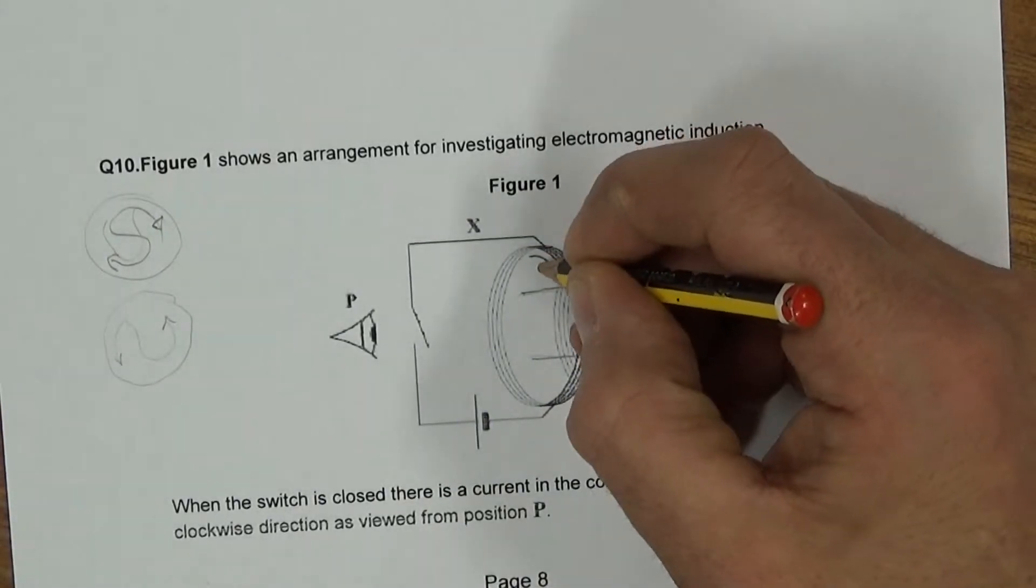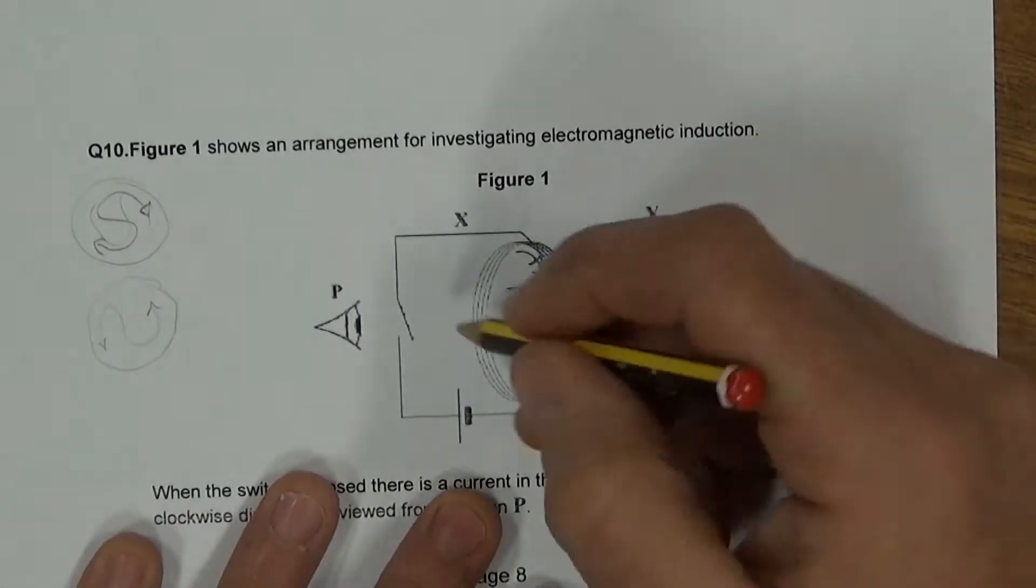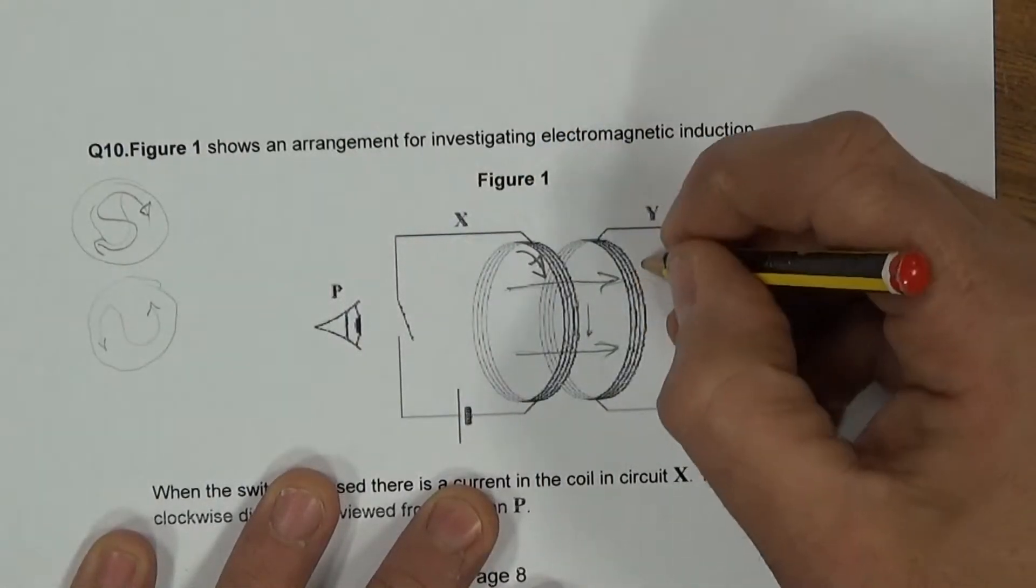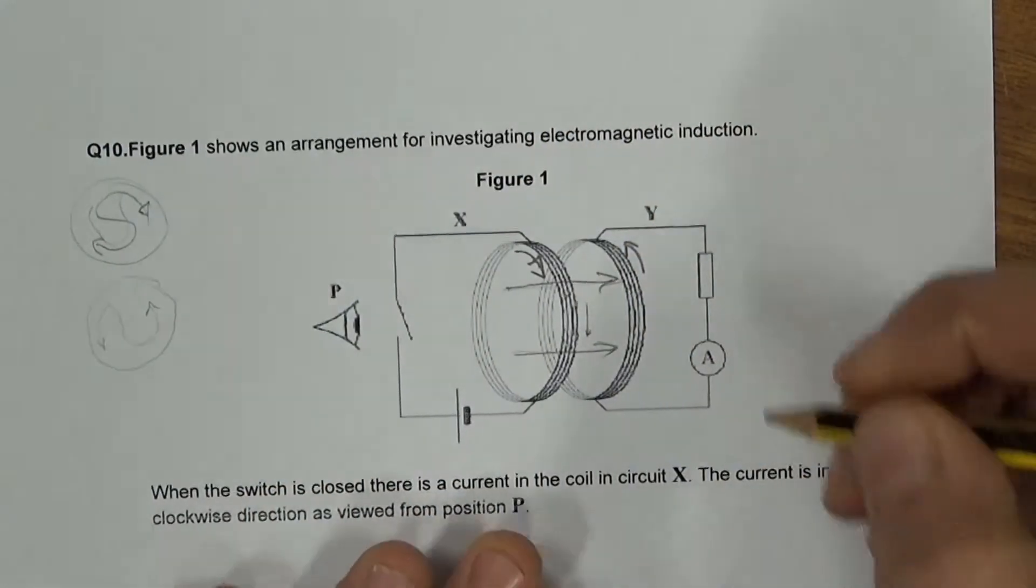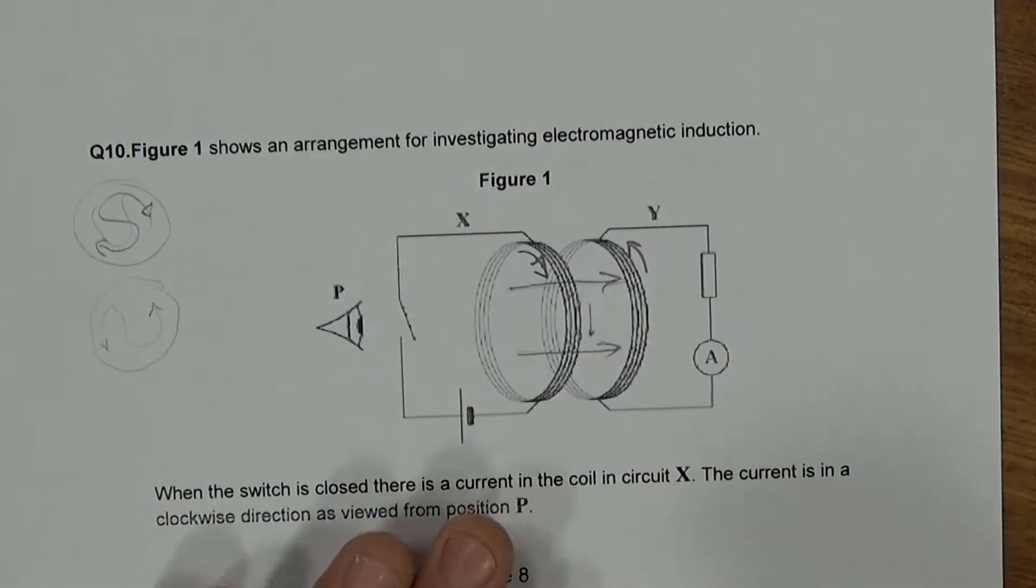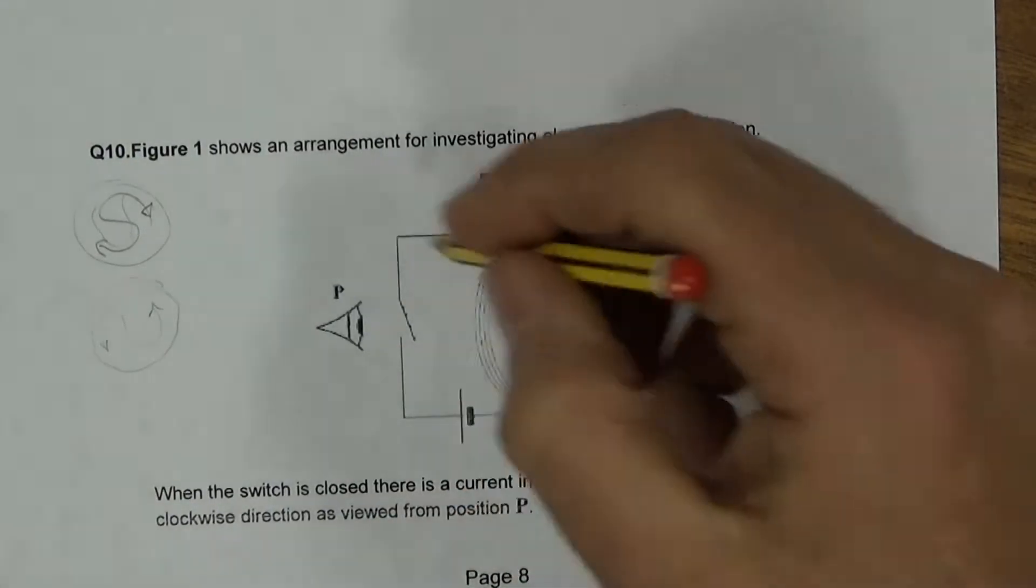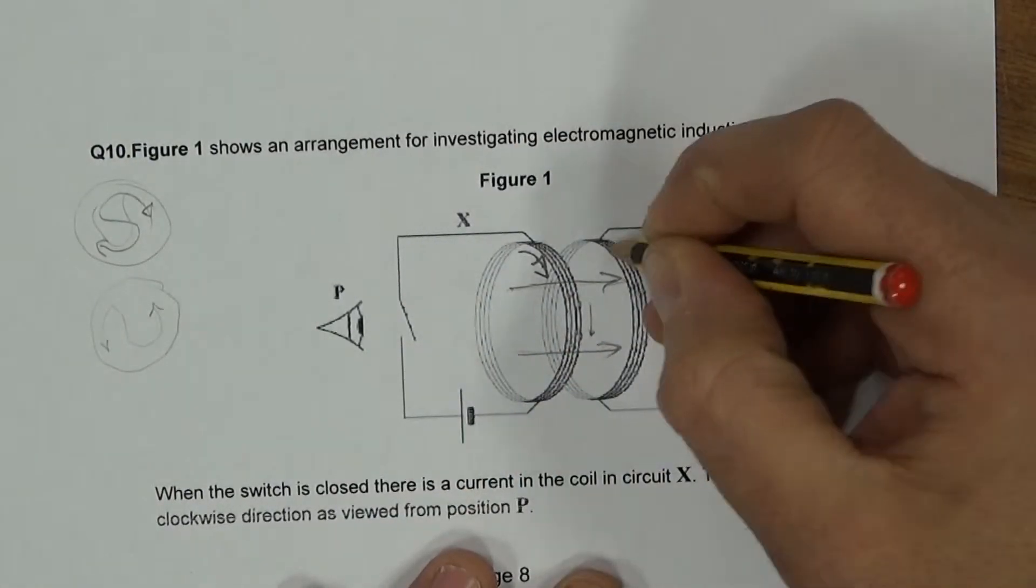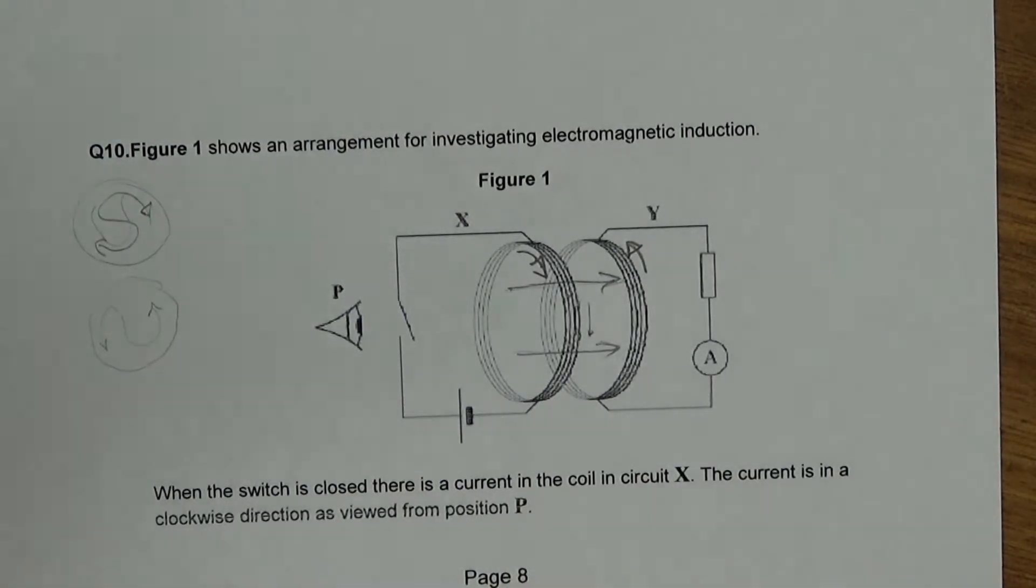So if this is going clockwise, like that, as the current develops, this is going to develop a current going anticlockwise to try and... So if this is going clockwise, this is going to try and develop a current going anticlockwise to oppose it.